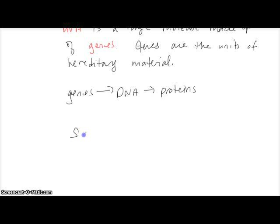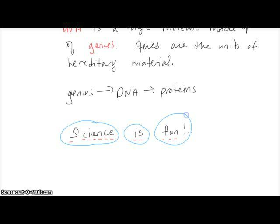So let's take a look at this sentence: 'Science is fun.' What we're going to do is determine the genes here. The genes are the individual letters. When genes come together, they code for DNA. So the genes here code for the DNA for the word 'science,' the genes code here for the DNA for the word 'is,' and this codes for the DNA for the word 'fun.' The DNA linked together forms proteins, and this whole structure is the protein.